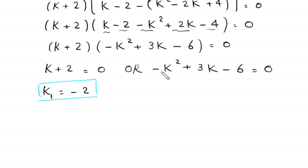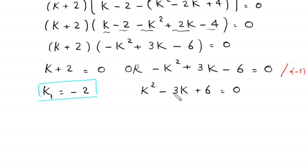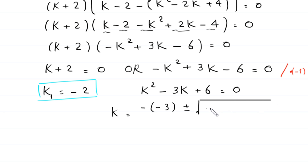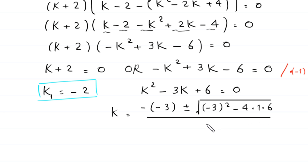From the quadratic equation, since k squared is negative we multiply the whole equation by negative 1, so this will become positive k squared minus 3 times k plus 6 is equal to zero. This is not factorable, so we solve it by the quadratic formula. According to the quadratic formula, k is equal to negative b, which is negative 3, plus or minus square root of b squared, which is negative 3 squared, minus 4 times a, which is 1, times c, which is 6.